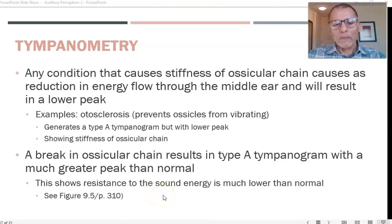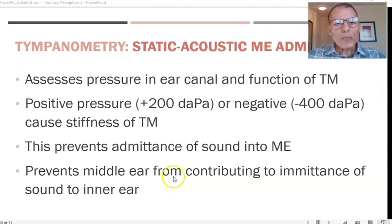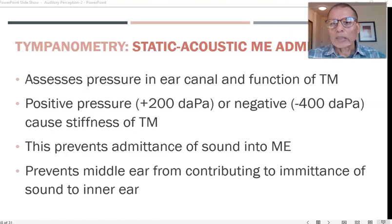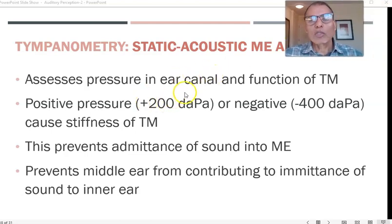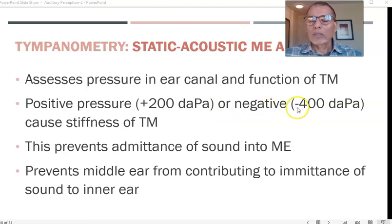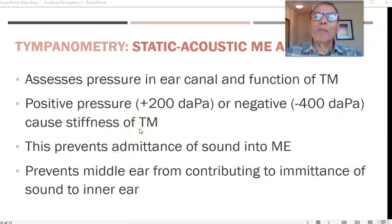Another kind of testing done with tympanometry is static acoustic middle ear admittance, which assesses the pressure in the ear canal and the function of the tympanic membrane. If the pressure is greater than positive 200 decapascals or more negative than negative 400 decapascals, that causes stiffness of the tympanic membrane, so this measure focuses on the tympanic membrane itself.